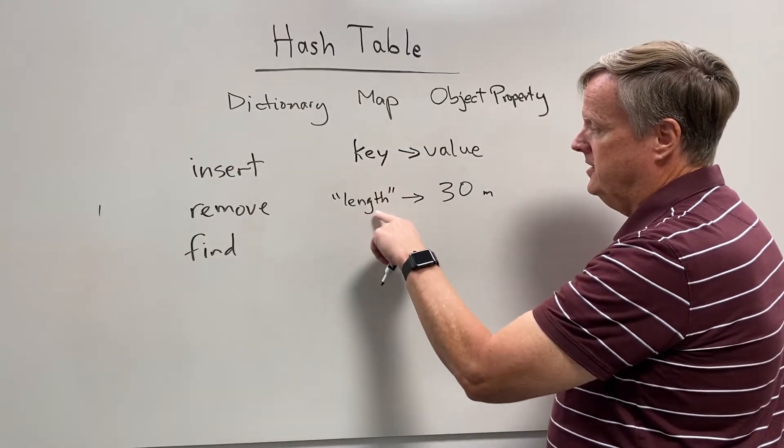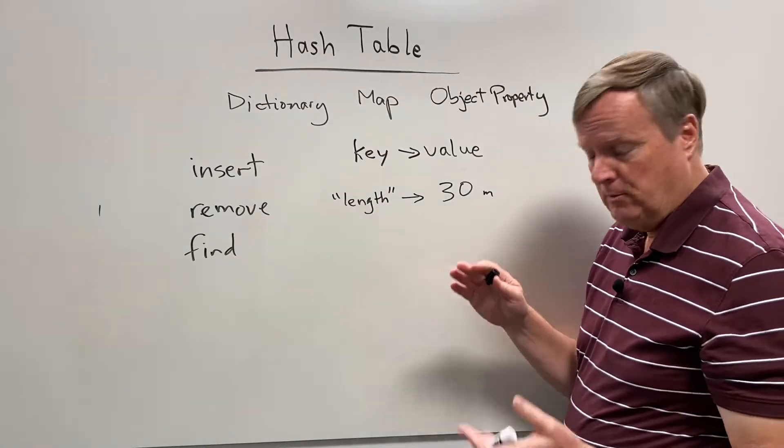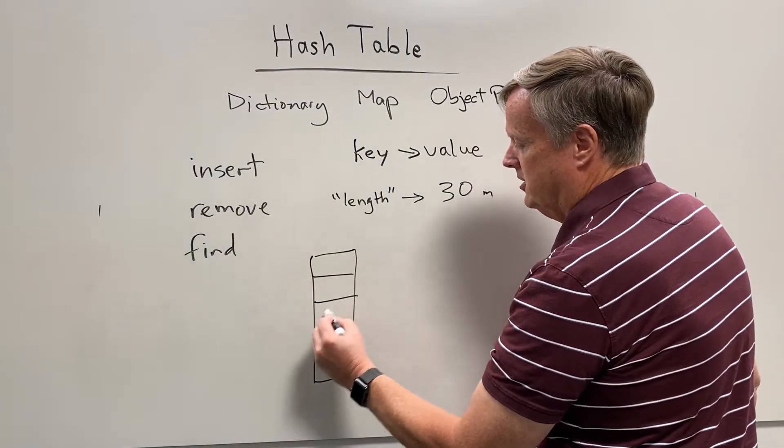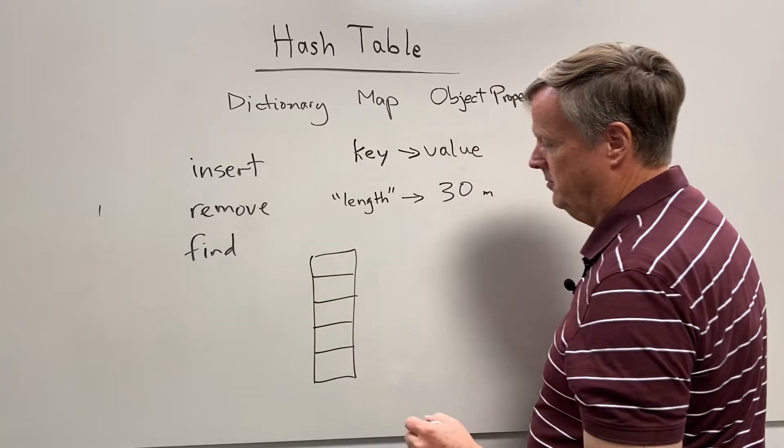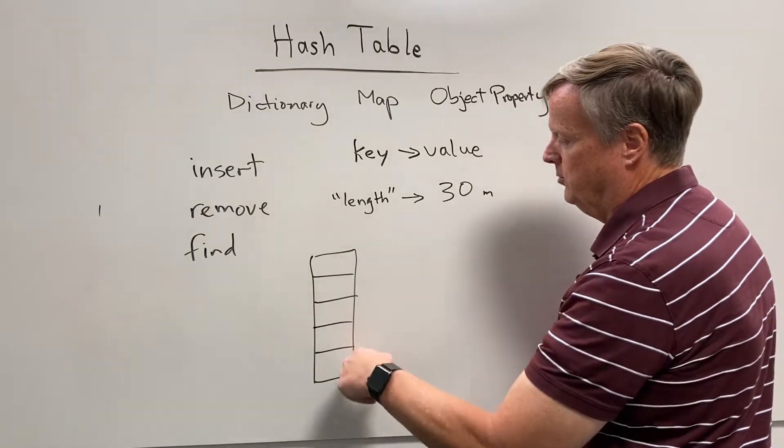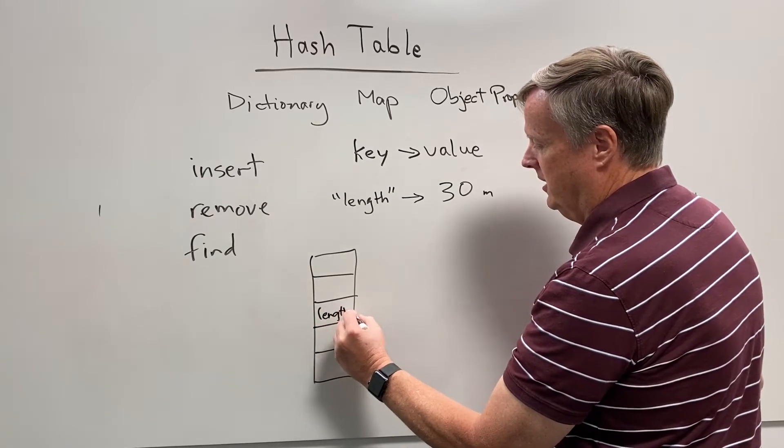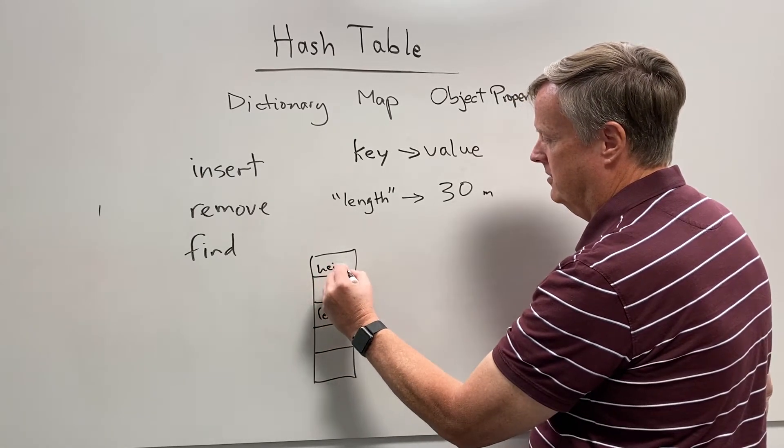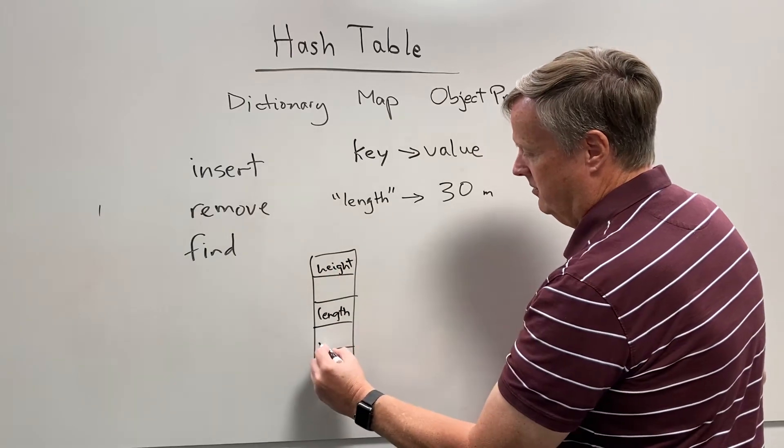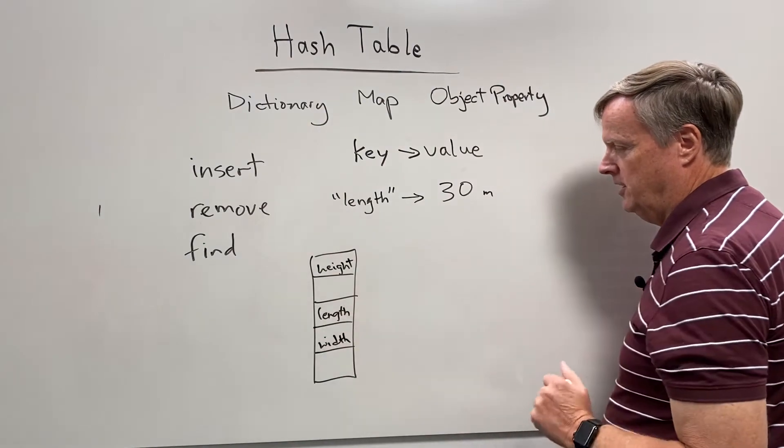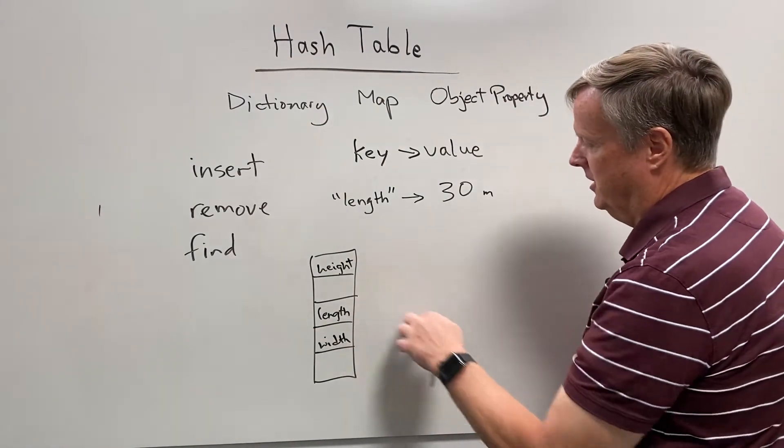First of all, we store the keys in an array. Remember we talked about arrays before, so we just have a straight array, and it's only sparse, partially populated. We call it a sparse array, and then we'll put the keys in here in somewhat random locations. Maybe length there, height here, width will end up down here, and so on. I'll talk in a minute about how those get there, where they belong, and how we determine that.